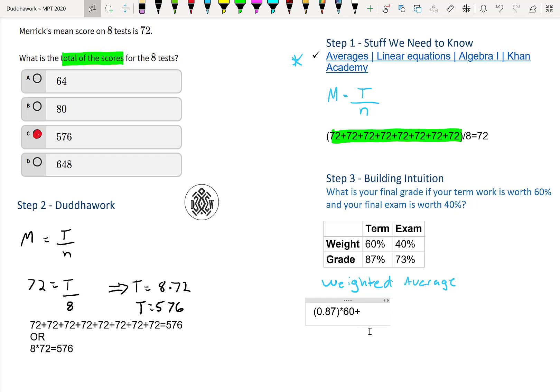So you do 0.73 times 40 points and then 81.4. That's your final grade. So again, it's your grade times the weight of that grade to get your final score out of a hundred. Therefore your final grade would be 81.4%.